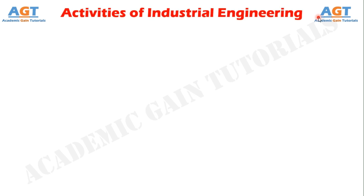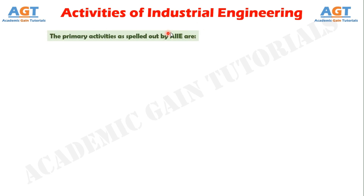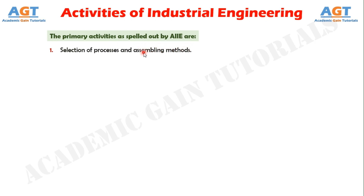In this video we will discuss the activities of industrial engineering. The primary activities of industrial engineering as spelled out by the American Institute of Industrial Engineers are: number one, industrial engineering is concerned with selection of processes and assembling methods; number two, selection and design of tools and equipment.